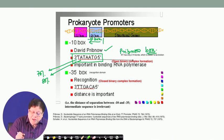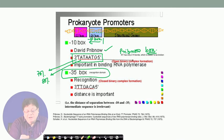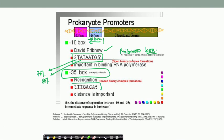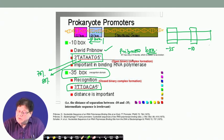Apart from the minus 10 box, scientists have also identified another recognition domain called the minus 35 box - another sequence 35 bases upstream. The consensus sequence there is T, T, T, G, A, C, A - though again this is not absolute. So in prokaryotes there are two types of promoter sequences: one at minus 35 and one at minus 10 - the Pribnow box - and then there is the initiation point.